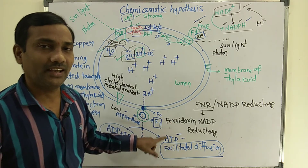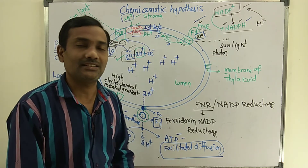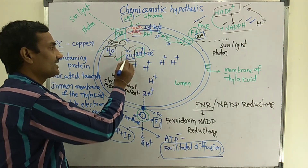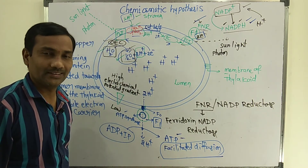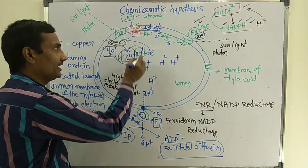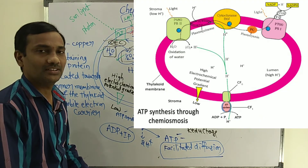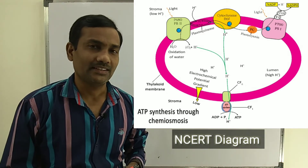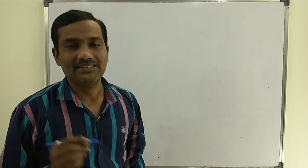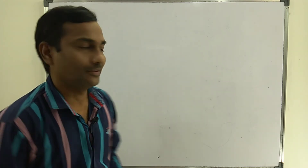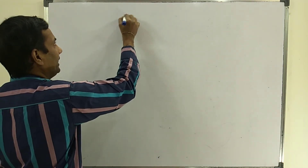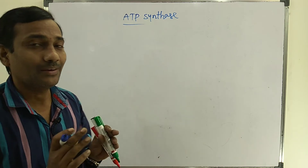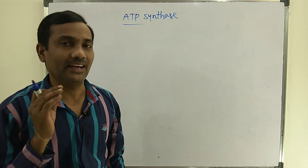Finally, what we can understand: ATP synthesis occurs in the stroma, NADPH is formed in the stroma, and oxygen is liberated in the lumen. These can be understood with the help of the Chemiosmotic Hypothesis, which explains formation of ATP. Now we discuss the structure of ATP synthase and what its main components are.